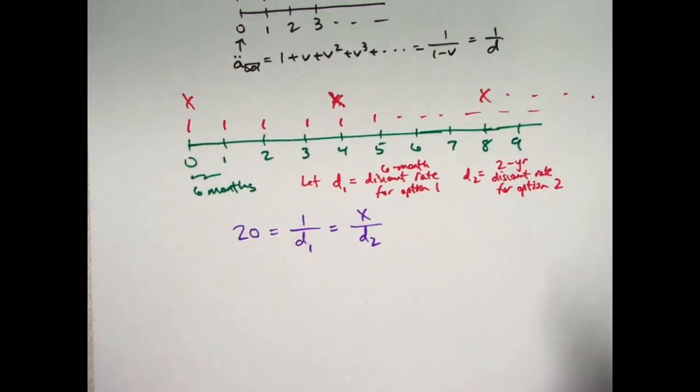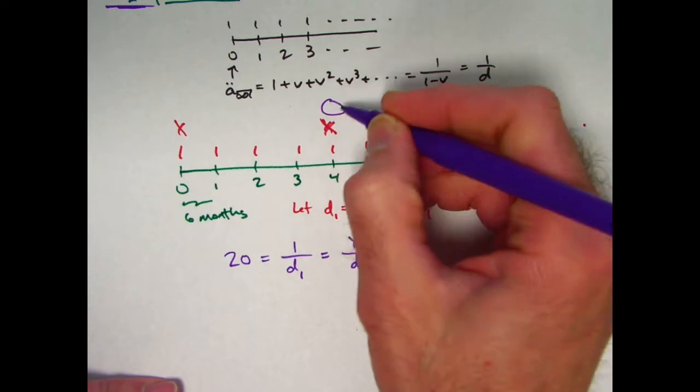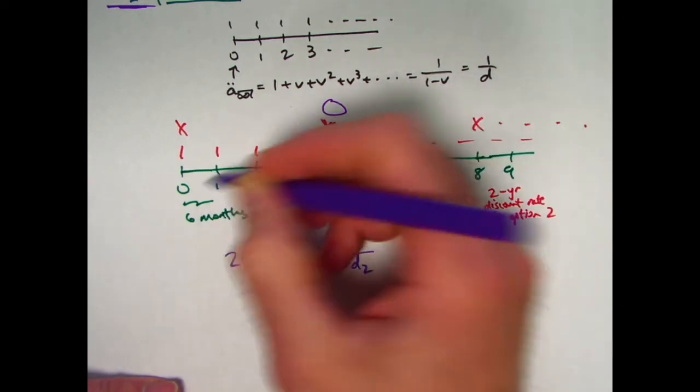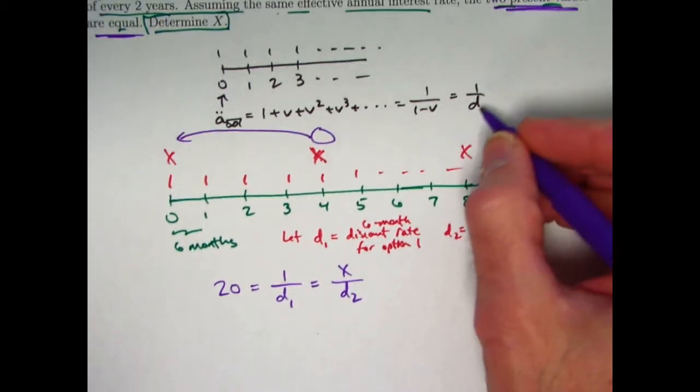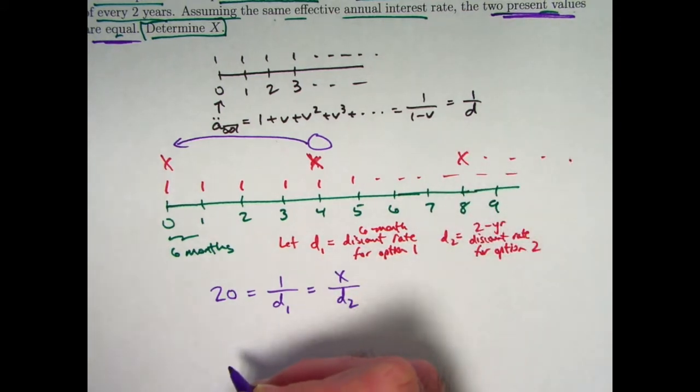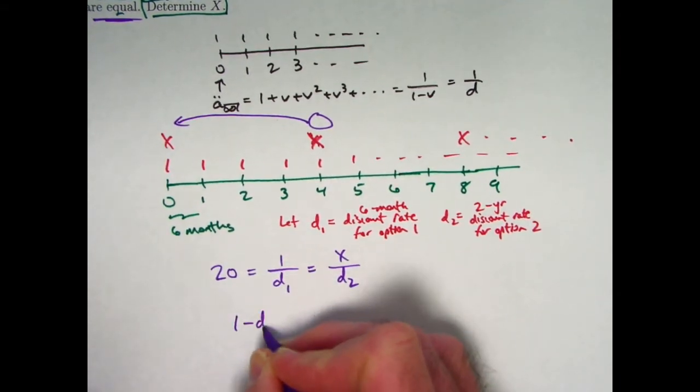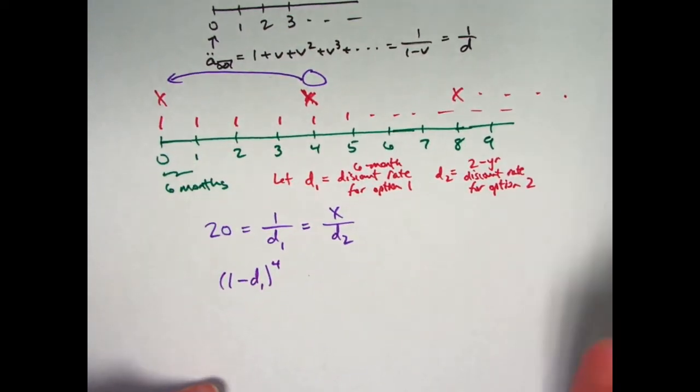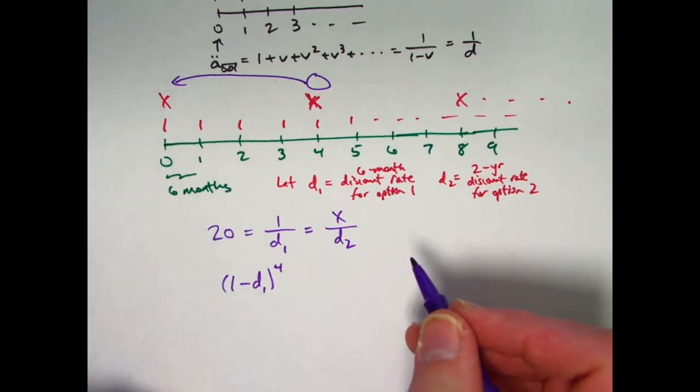Let's imagine discounting back in time an arbitrary amount from time 4, which is two years from time 0, for six-month periods. How would we do that using d1? Since d is the discount rate, 1 - d would be the discount factor, it would equal v. I could write (1 - d1) to the fourth power as essentially meaning v1 to the fourth power for option one. I need to discount it back in time by four periods, four six-month periods, with option one.